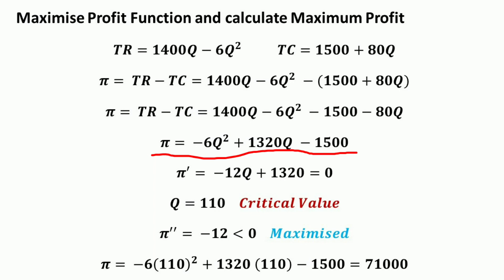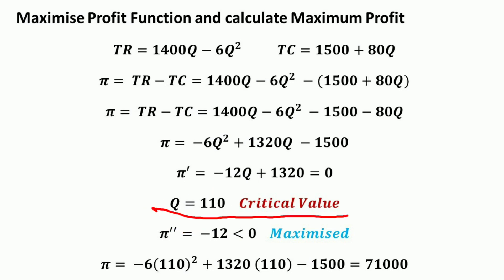Taking the first derivative of the total profit function: π' = -12q + 1320 = 0. Solving gives q = 110. So the critical value is q = 110. For the second order condition, the second derivative is -12, which is less than 0, confirming that the profit function is maximized.